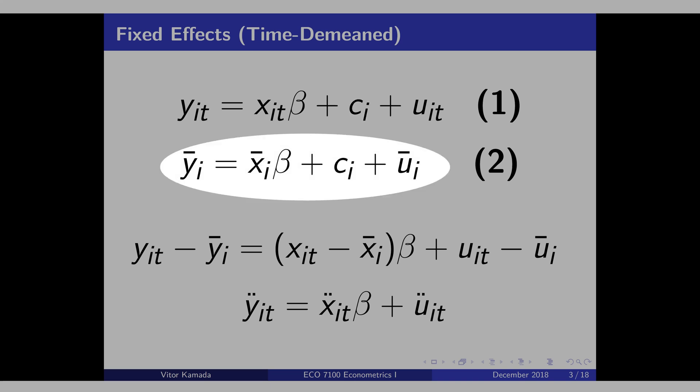Then, let's average the data over time. See this y bar is the mean. See that there is no T here. That means you average over time. See that we disappear with T because you average over T.